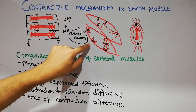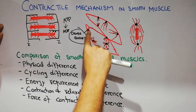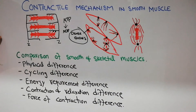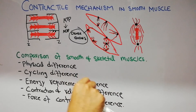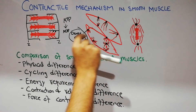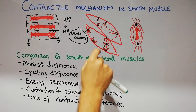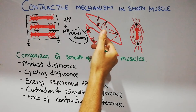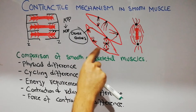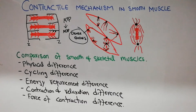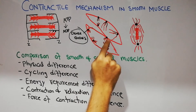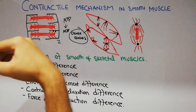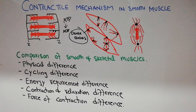The dense bodies are present inside the cytoplasm as well as in the membrane of smooth muscle cells. Some dense bodies help in transferring the power of contraction from one cell to another. When one cell contracts, through these dense bodies present between two cells, the contraction spreads so that adjacent cells also contract.